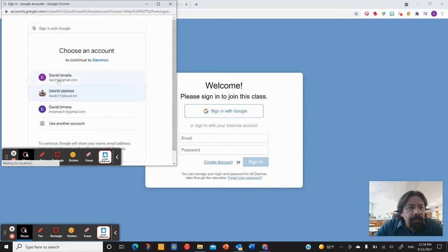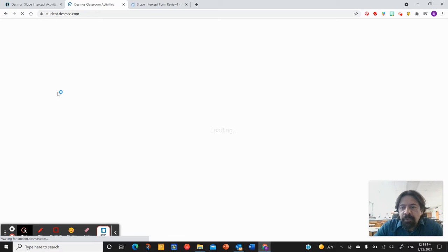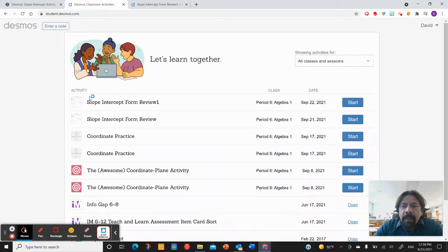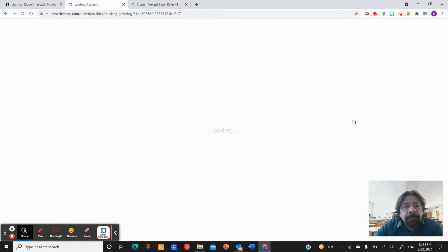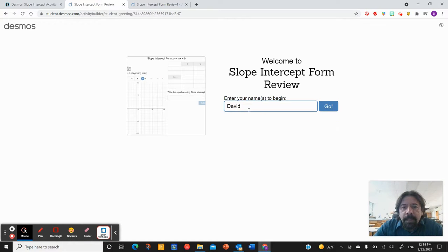What that means to me is I'm going to use my LAUSD account. Since you already have an account, this should work for you the same way. Once I'm there, I'm going to go to my Slope Intercept Form Review, period 6. It has my name, press go.